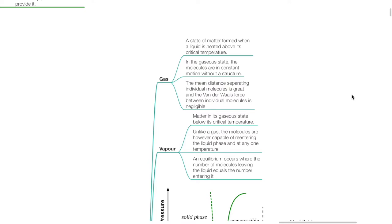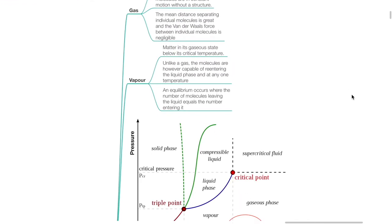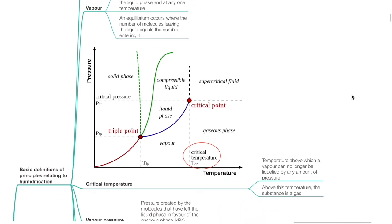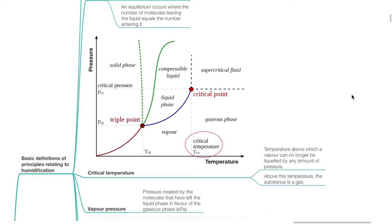Vapor is matter in its gaseous state below its critical temperature. Unlike a gas, the molecules are capable of re-entering the liquid phase at any one temperature. An equilibrium occurs where the number of molecules leaving the liquid equals the numbers entering it. Critical temperature is the temperature above which a vapor can no longer be liquefied by any amount of pressure. Above this temperature, the substance is a gas.